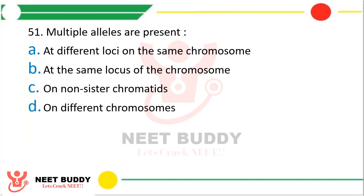Question 51. Multiple alleles are present: at different loci on the same chromosome, at the same locus of the chromosome, or on non-sister chromatids on different chromosomes? The correct answer is option B — at the same locus of the chromosome.